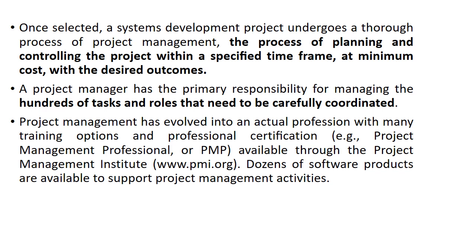Once any project is selected, it must pass through different channels. First, the process of planning is started. After that, we have to specify the time framework. Third is the minimum cost, and fourth is the desired outcome. The system development project undergoes a thorough process of project management, where it is determined how to plan the process, deliver the project within the time framework, complete the task with minimum cost, and achieve the desired outcomes.